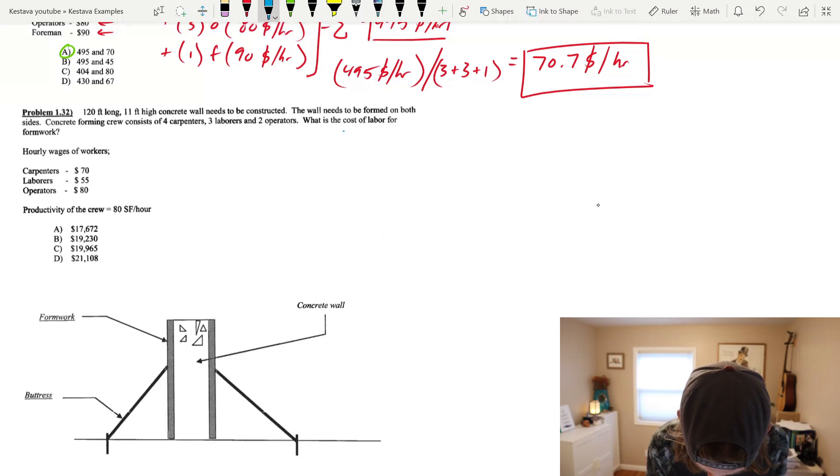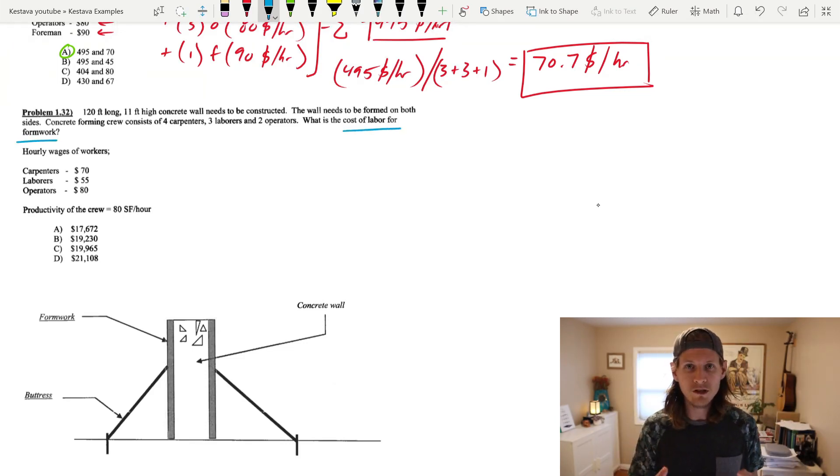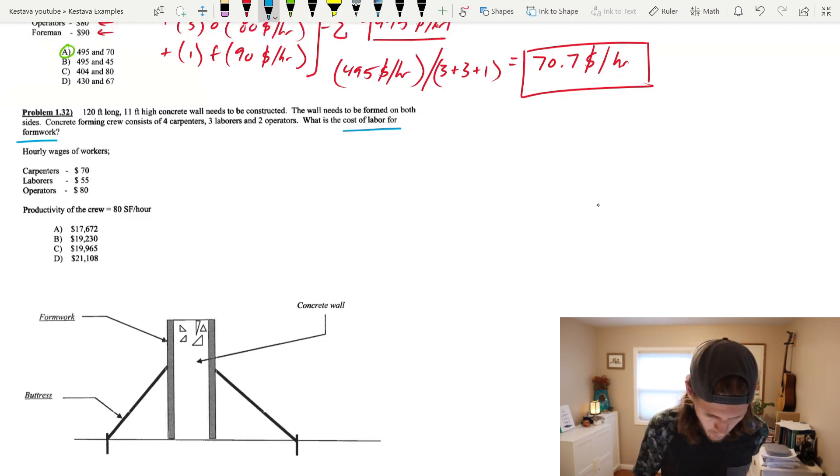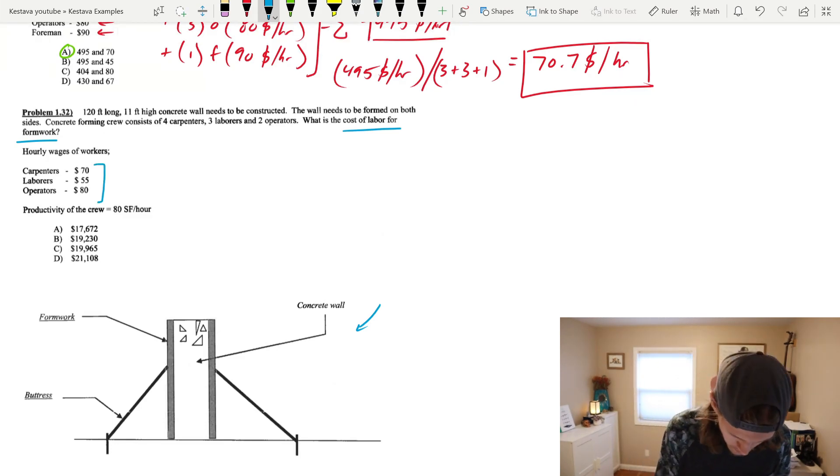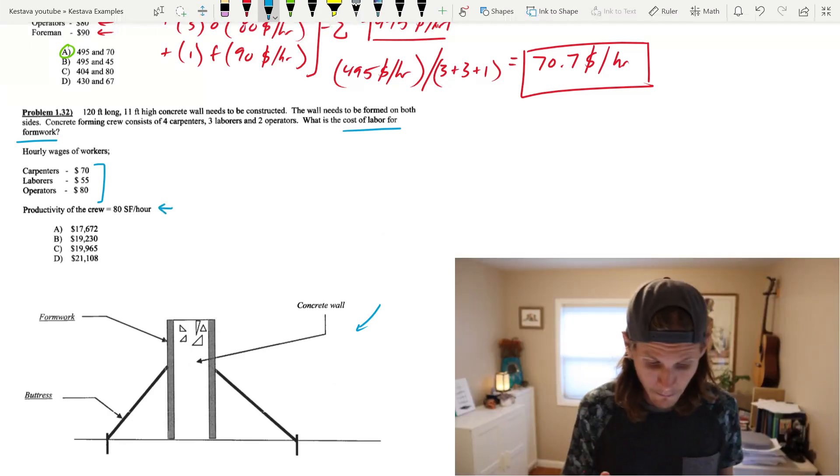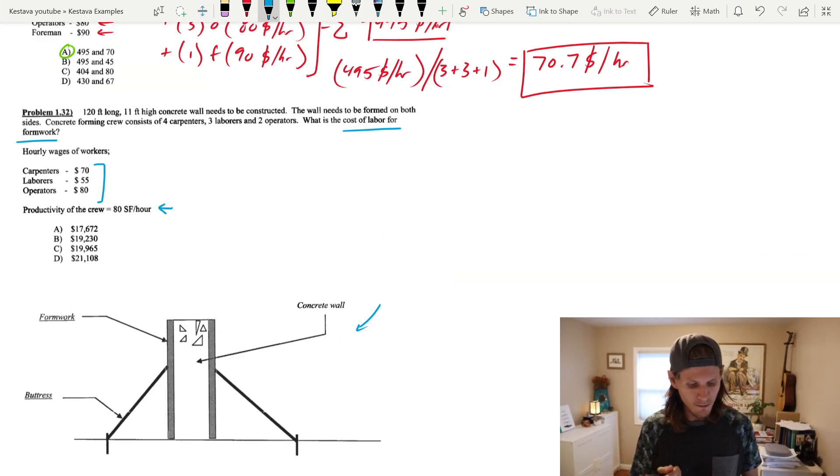So this whole problem, we're going to go do blue. So what is the cost of labor for the formwork? So how much lump sum is it going to cost in order to construct the formwork to make the wall? And they give you this little diagram down here of the wall. Well, what I would do, and again, they show you hourly wages per each type of worker. And they also give you the productivity of the crew, tells you how fast they're able to construct it at 80 square feet of formwork per hour.